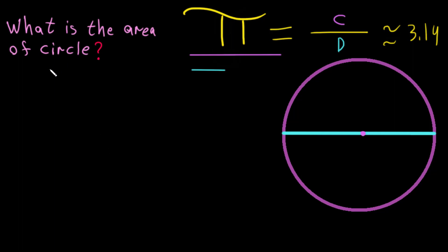Let's derive the area of the circle intuitively. We have discussed this before — if you divide the purple one (circumference) by the blue one (diameter), you will get pi. That's a simple way to see where pi comes from.